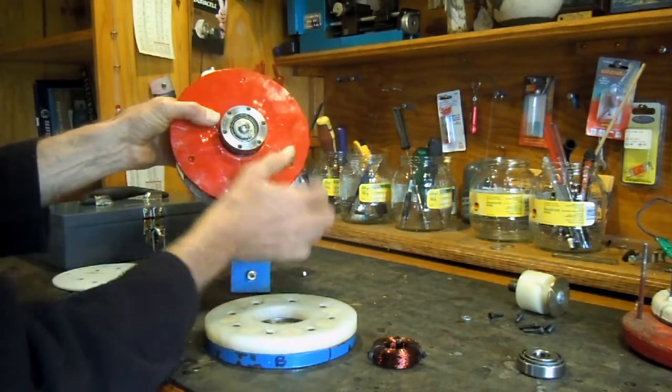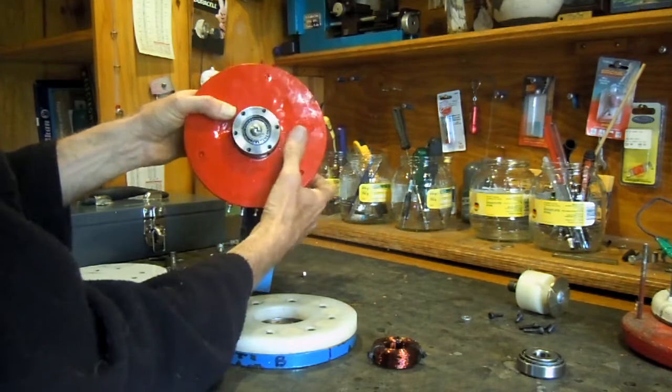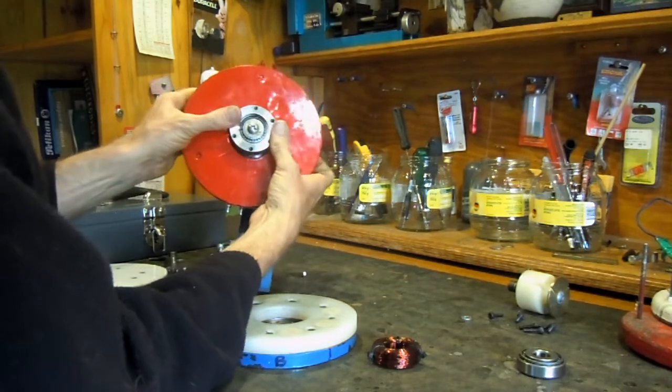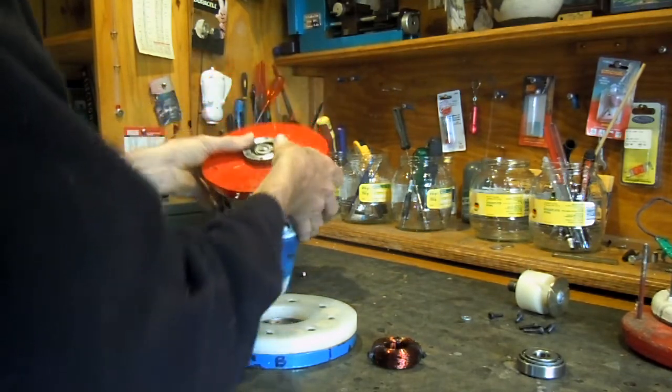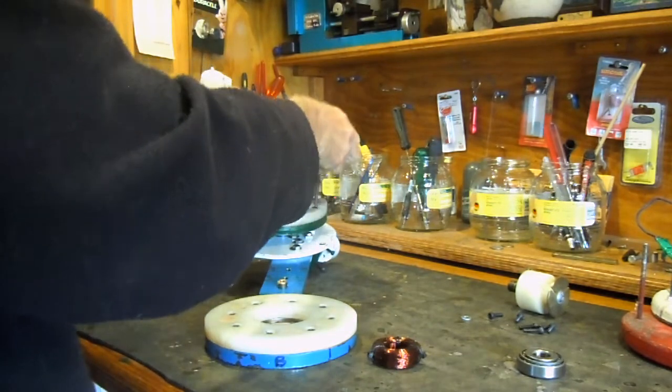Then in the front here we can see one of the tapered roller bearings. We'll take the stator off now, like this.